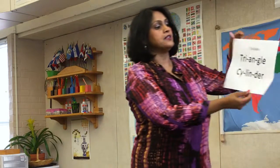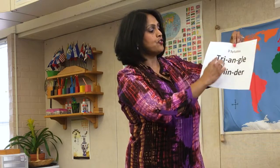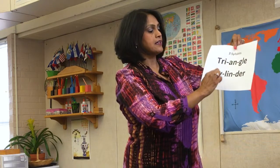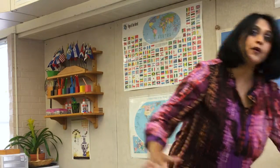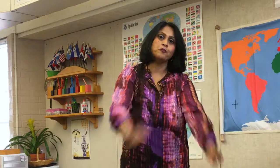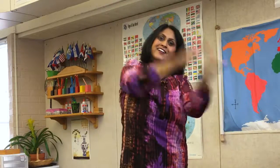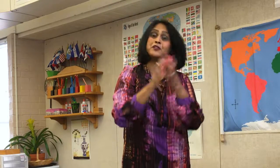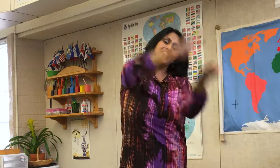So one syllable, two syllables, and then we get to three syllable words. Triangle. Cylinder. Let's use our next movement, which is the chomp, chomp movement. So let's do triangle first — tri-angle. How many syllables? My students will have to say three. Let's try the next one — cylinder. How many syllables is that? And they'll say three. Great job, you guys are doing a great job.